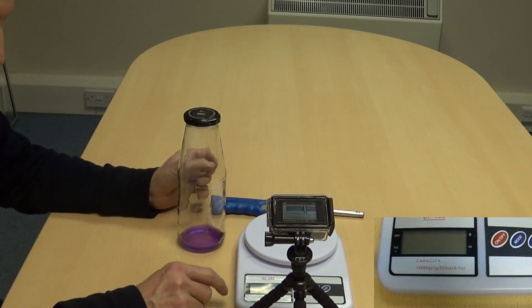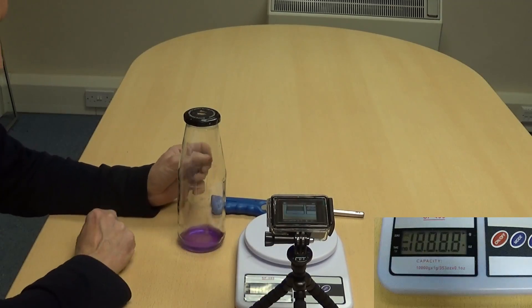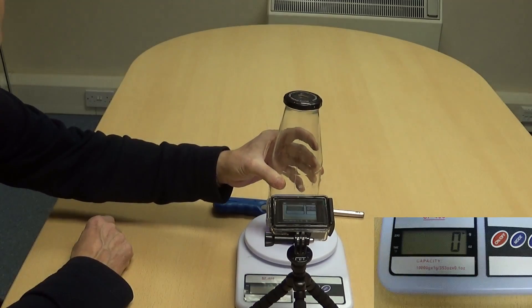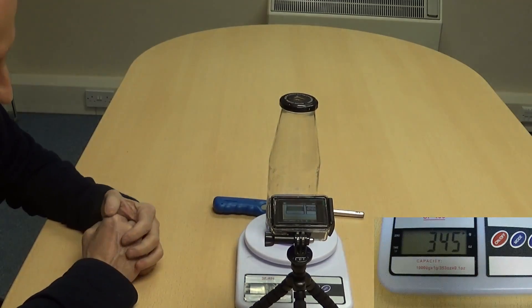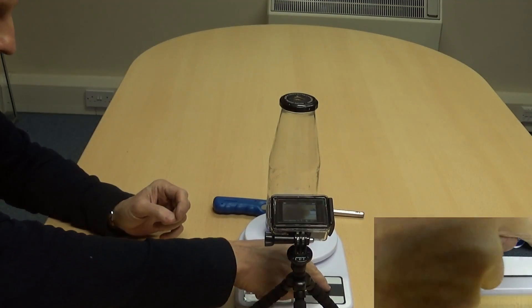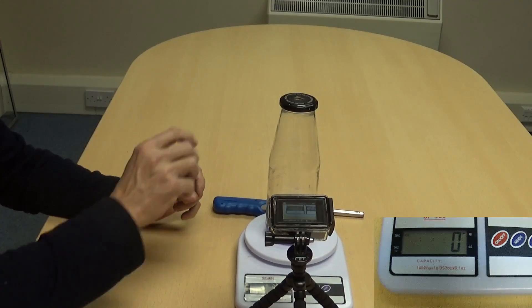So, we have here a scale which I'm going to turn on. We are going to put the passata jar pulse jet on there. Weight of 342 grams. Set that to zero.